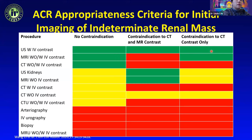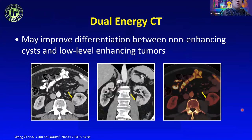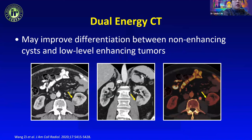For renal mass protocol we still do a traditional four-phase protocol with non-contrast, arterial phase, venous phase, and delayed phase images. Some institutions like to do a dual-phase CT, which may improve differentiation between non-enhancing cysts and low-level enhancing tumors. Theoretically you can also eliminate the non-contrast phase using dual energy capabilities to give you virtual non-contrast.